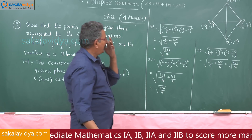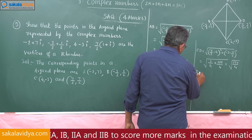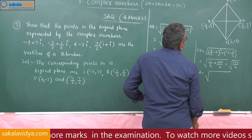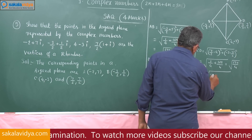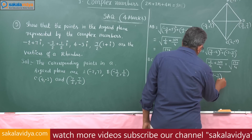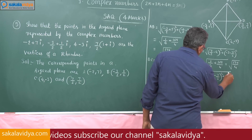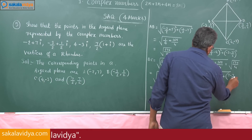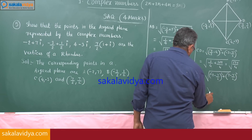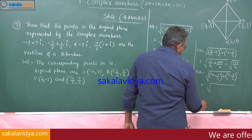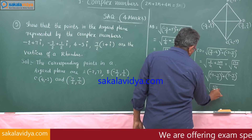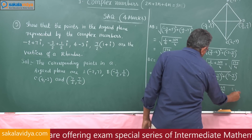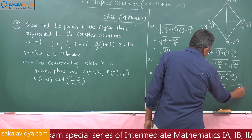Now let us verify DA. DA is root of (minus 2 minus 7 by 2) squared plus (7 minus 7 by 2) squared, which gives root of 121 by 4 plus 49 by 4, that is root of 170 by 4. So DA is also equal.